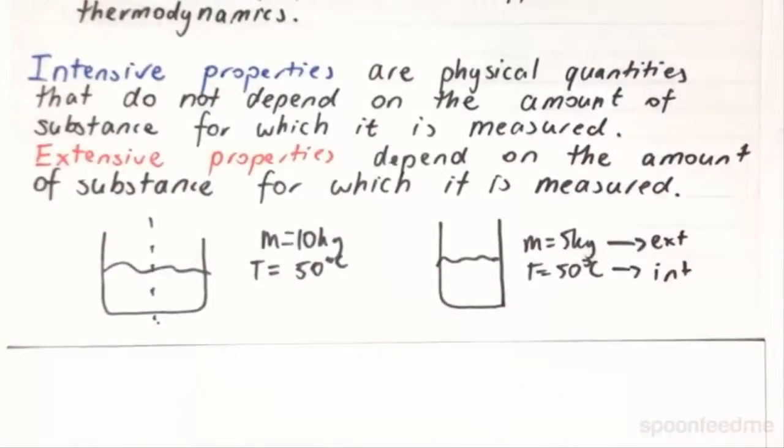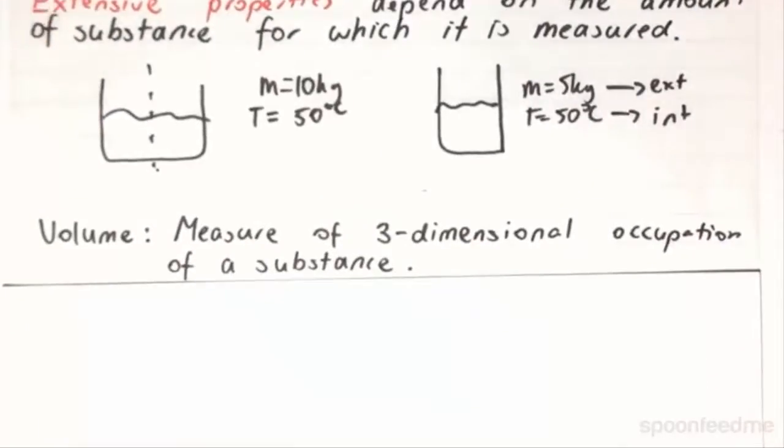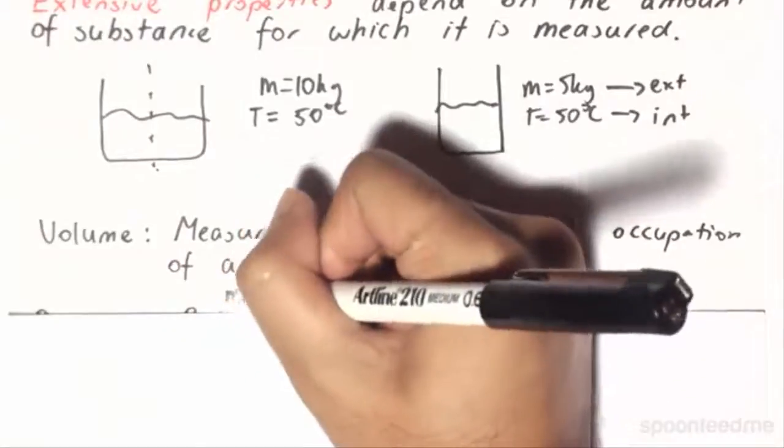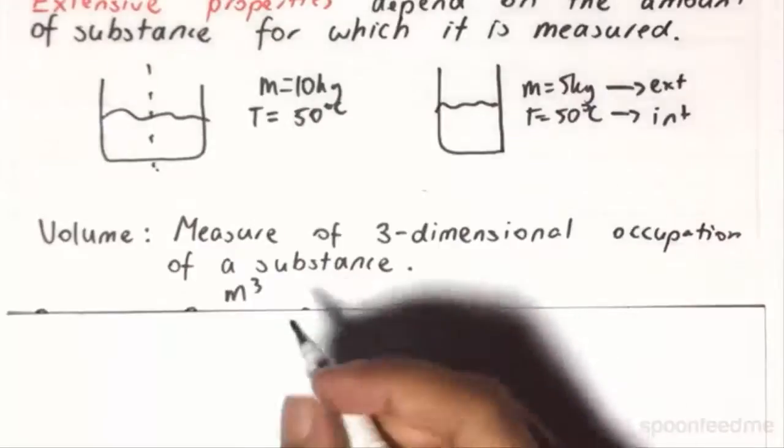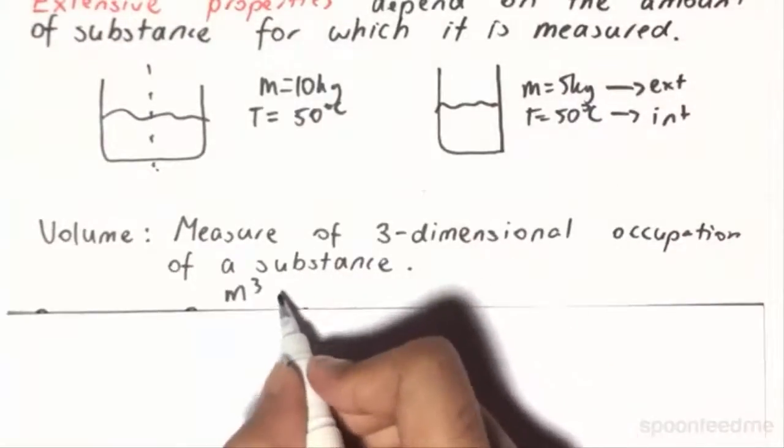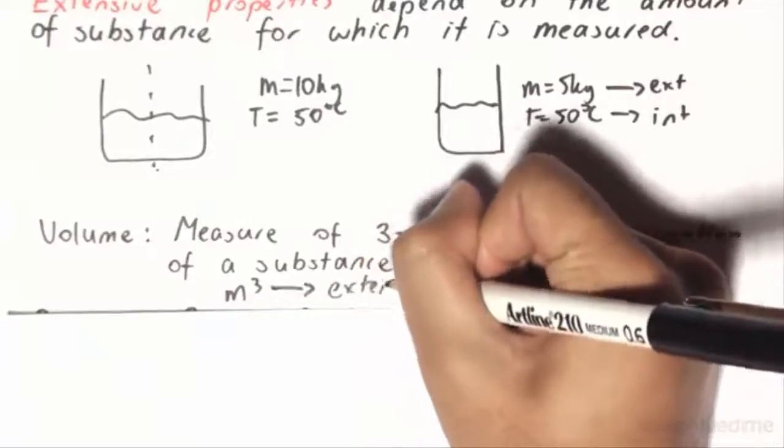So let us look at the key properties we'll be discussing. We have volume. Volume is a measure of three-dimensional occupation of a substance, and it is measured in meters cubed. Furthermore, it is going to be an extensive property by definition.